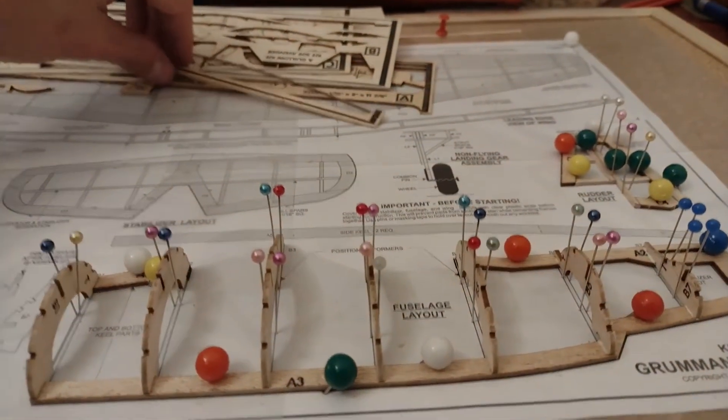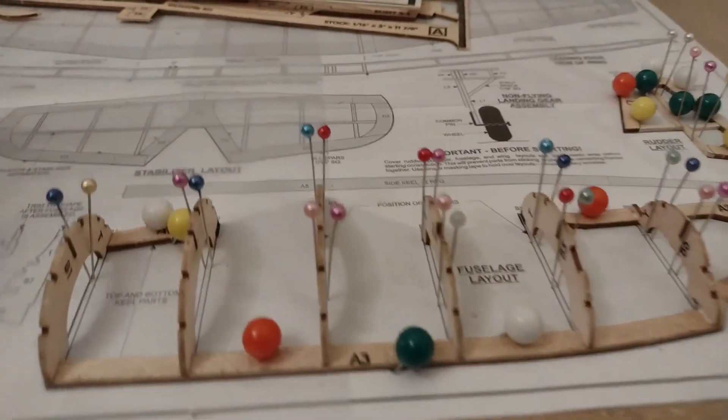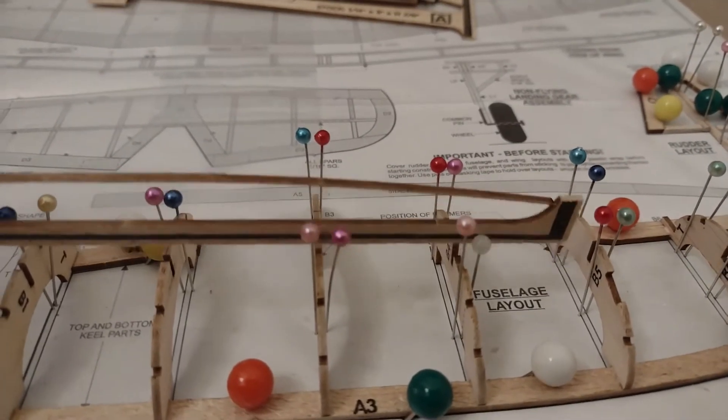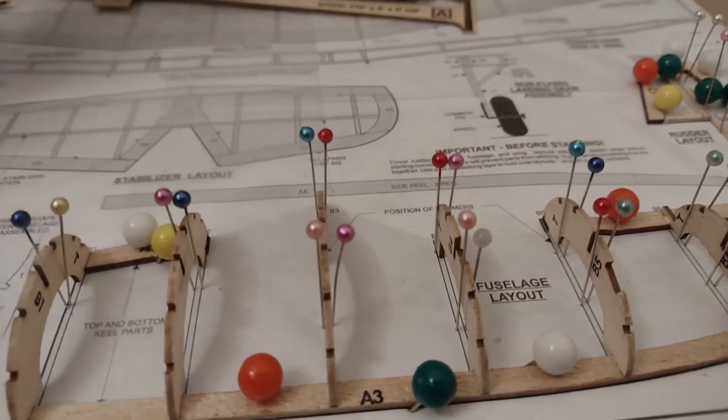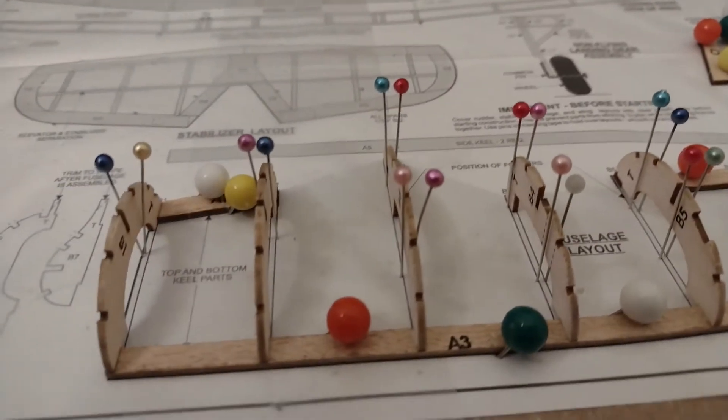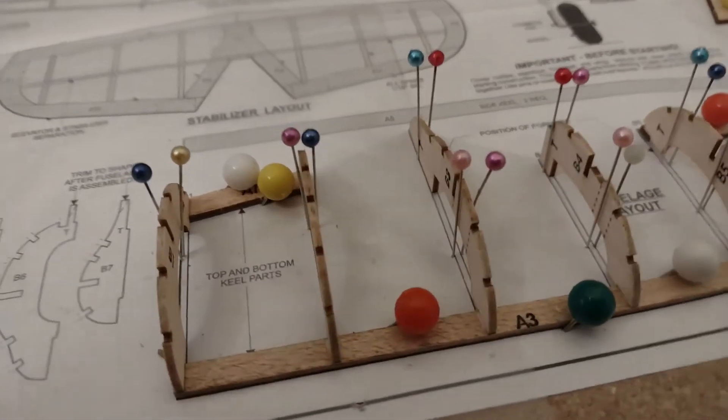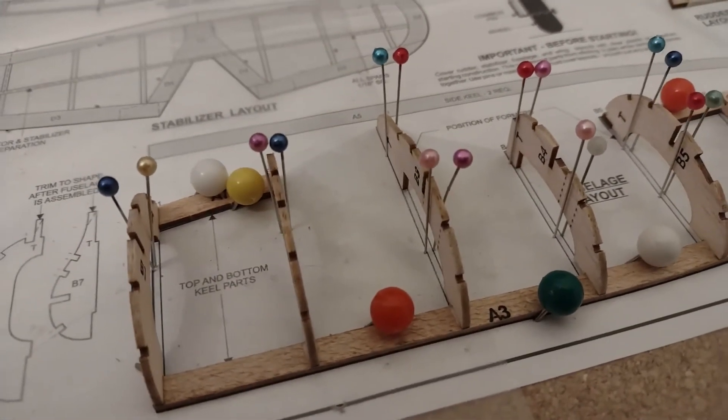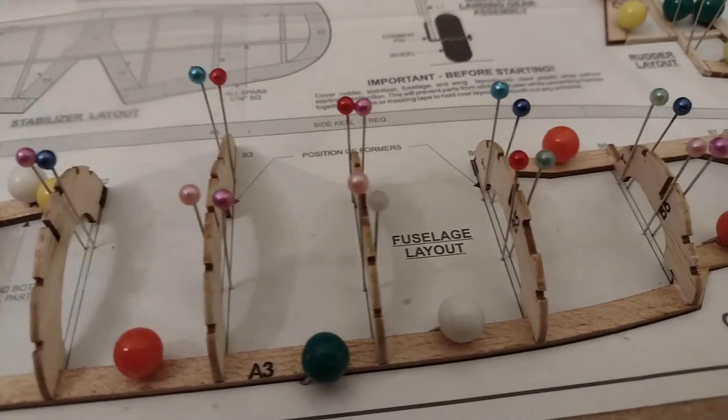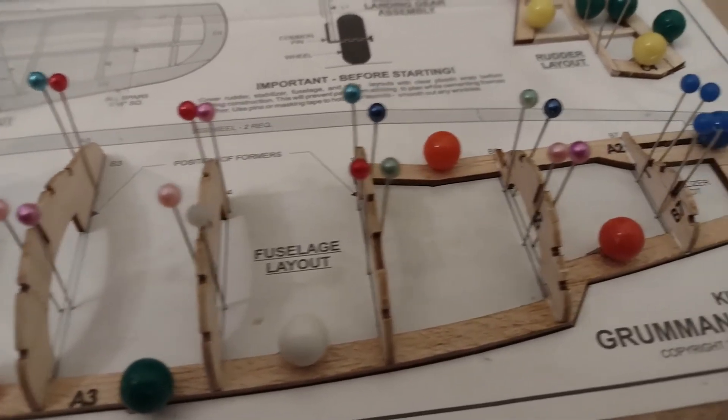There's one slot here for the side keel. I tried it before putting the pieces on because on the Spitfire it turned out the side keel was wider, so I had to sand down most of the fuselage formers. I learned my lesson and tried them first. These fit better.